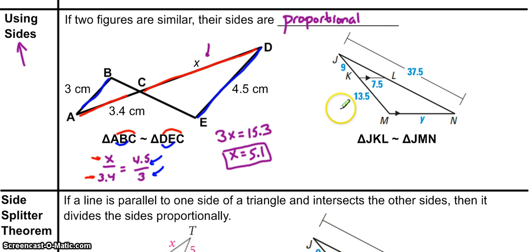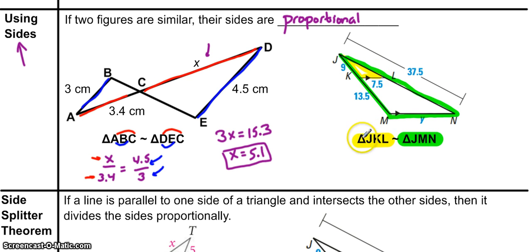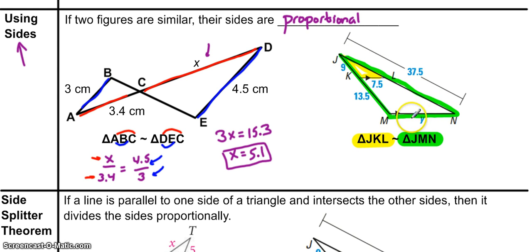This next problem is a little bit tricky. We're given that triangle JKL is similar to triangle JMN, and we're asked to find the value of Y. The two triangles appear to be overlapping, so I'll take a highlighter and highlight the two different triangles. I'll identify the smaller triangle JKL with a yellow highlighter, and the larger triangle JMN with a green highlighter — I suggest you do this on your own paper, it'll make things a lot easier to see.